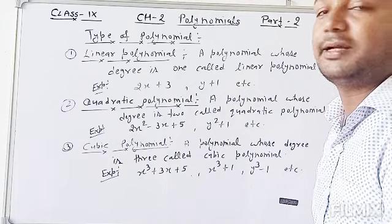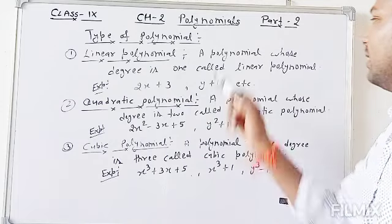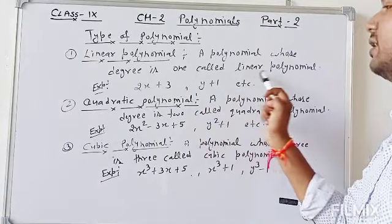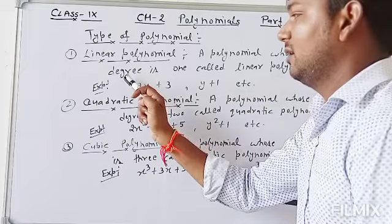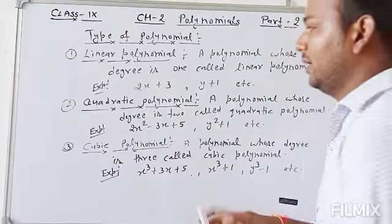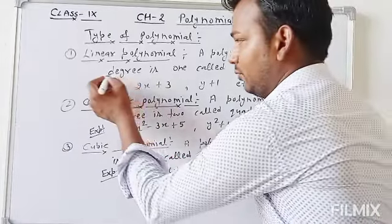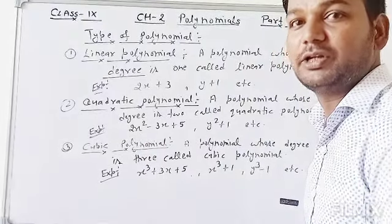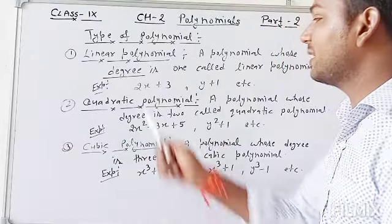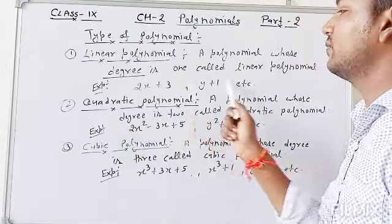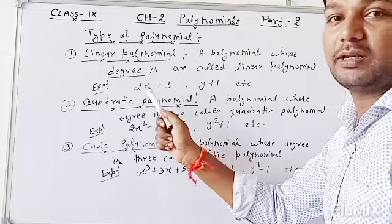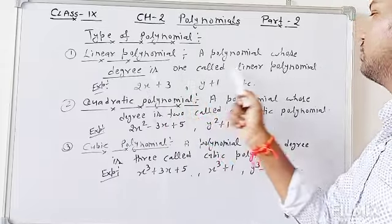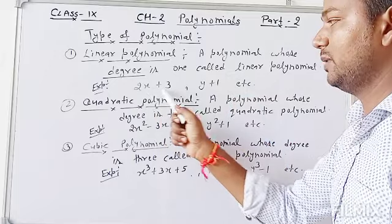So what is a linear polynomial? A polynomial whose degree is 1 is called a linear polynomial. In the previous video I discussed what is degree — the maximum power of a polynomial is called its degree. So a polynomial whose maximum power is 1 is called a linear polynomial.